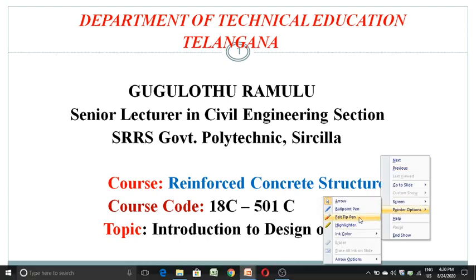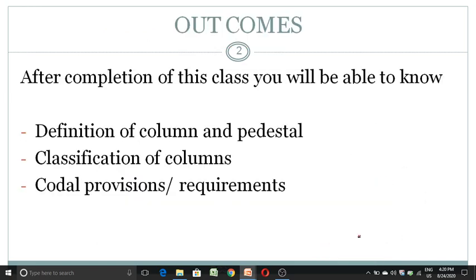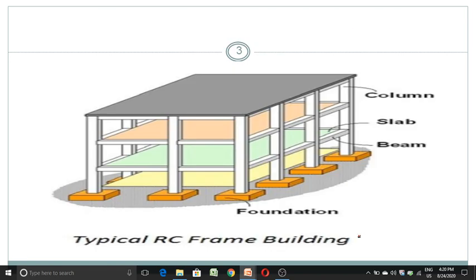Before discussing this topic, let me discuss what the components of a building are. We have so many components of a building: from top, it is a slab, then we have a column, again a slab, then a column and beam — a slab and beam combination — and then a column and a foundation. This is for a multi-story building.